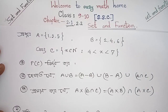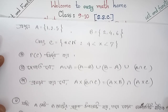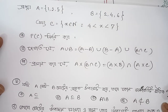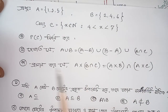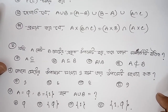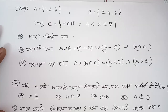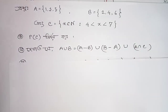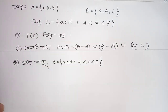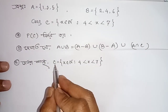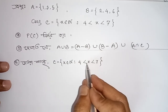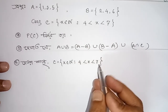Assalamualaikum warahmatullahi wabarakatuh. We will do the same thing. Set function — most important and essential. The way is 4 less than x less than 7.